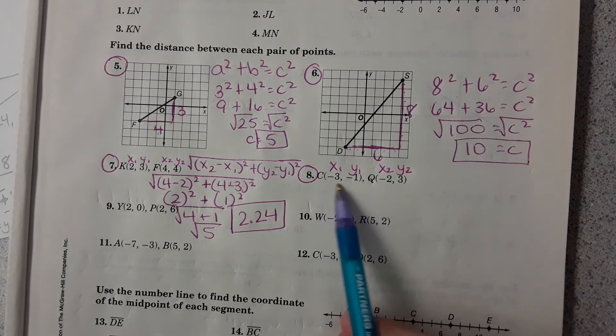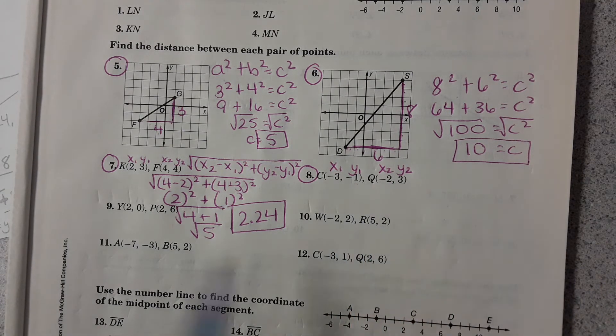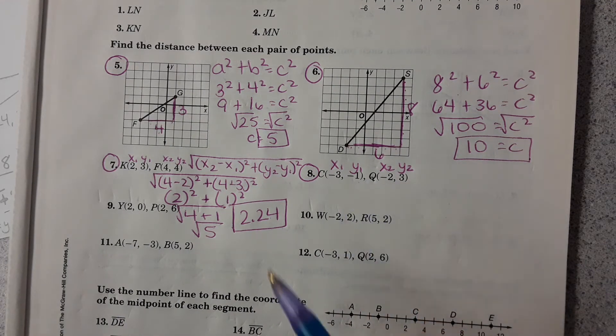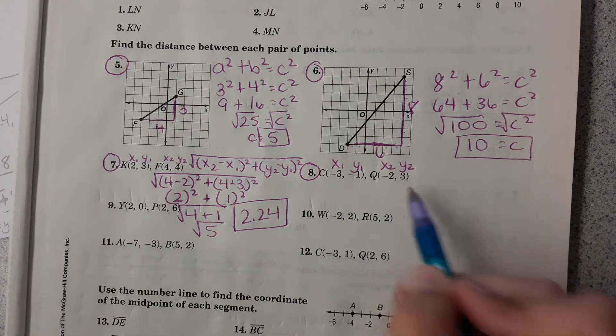Notice it doesn't tell you whether this is point 1 or point 2, but it doesn't matter. Distance is the same amount whether it's forward or backward. So whichever one is point 1 and point 2, it doesn't matter.